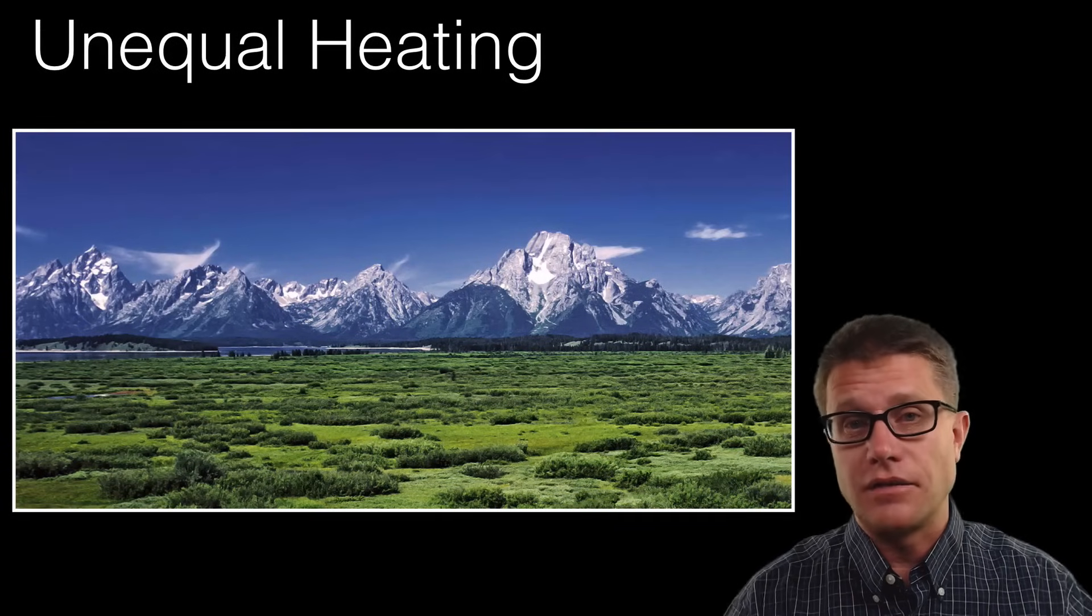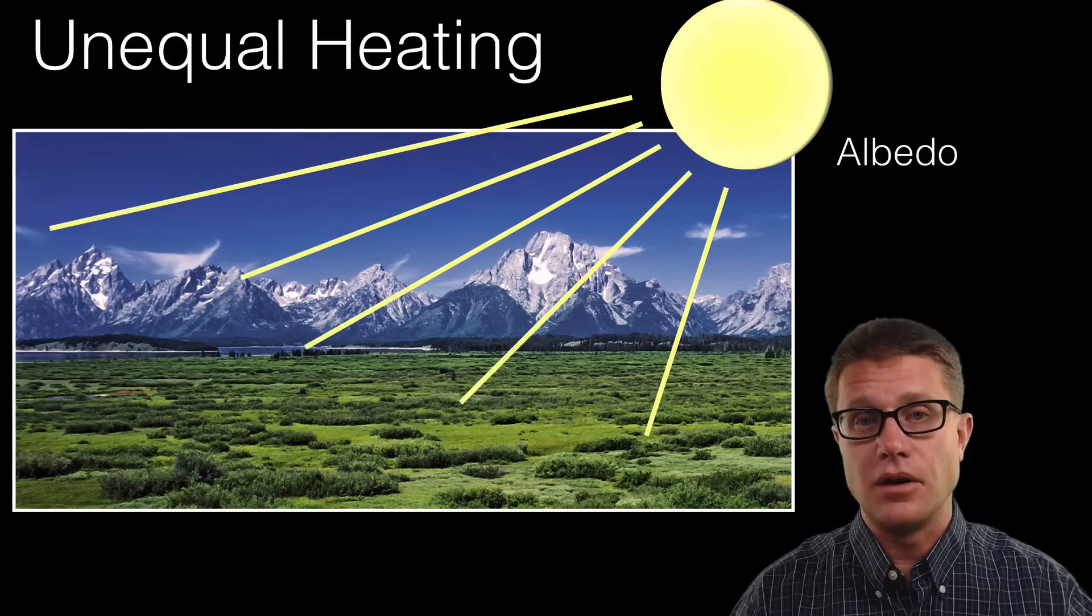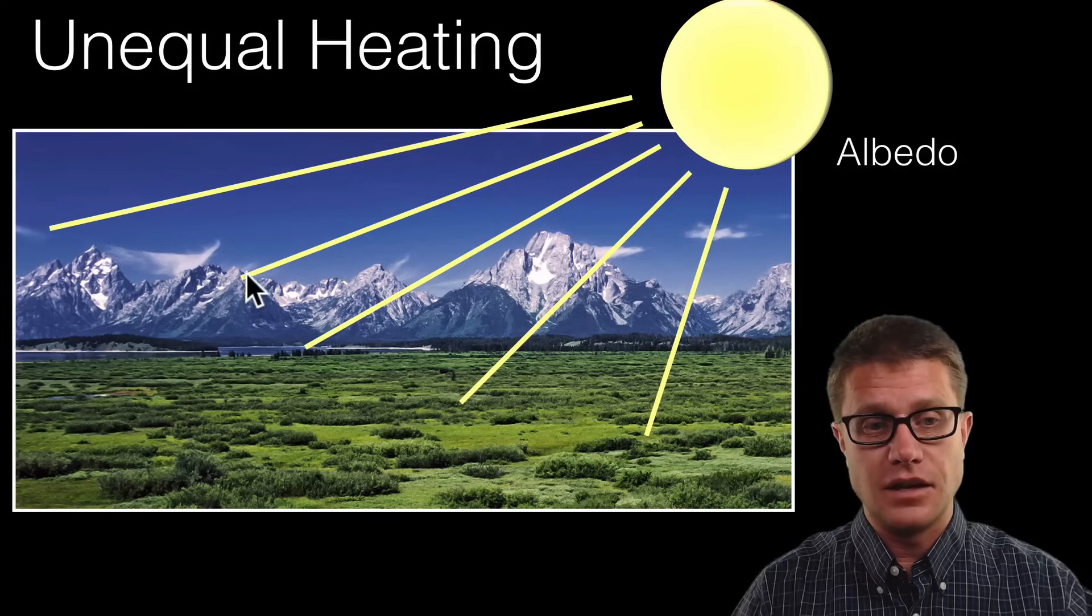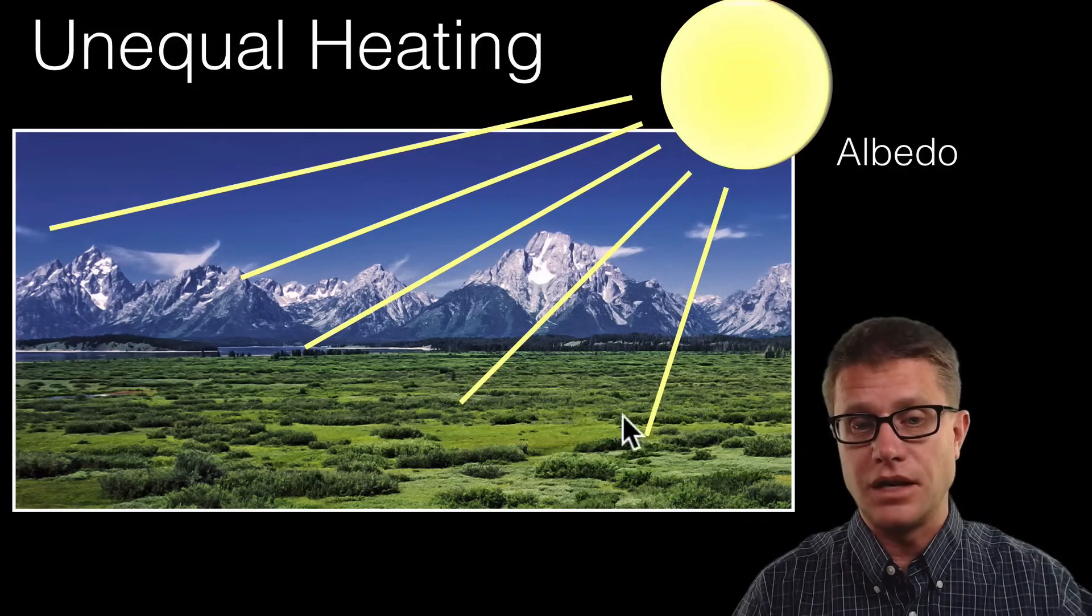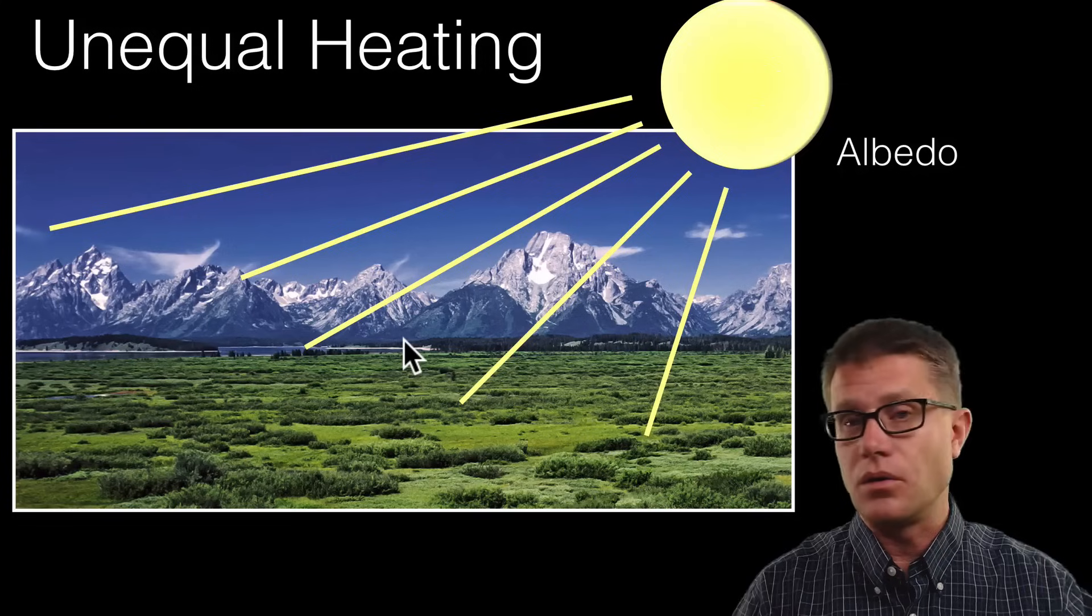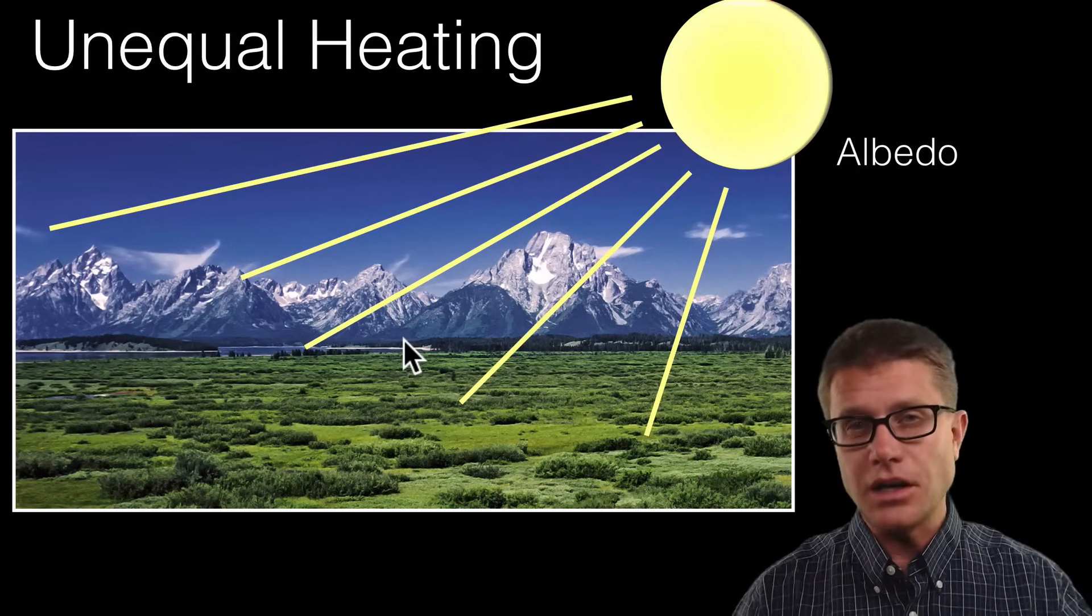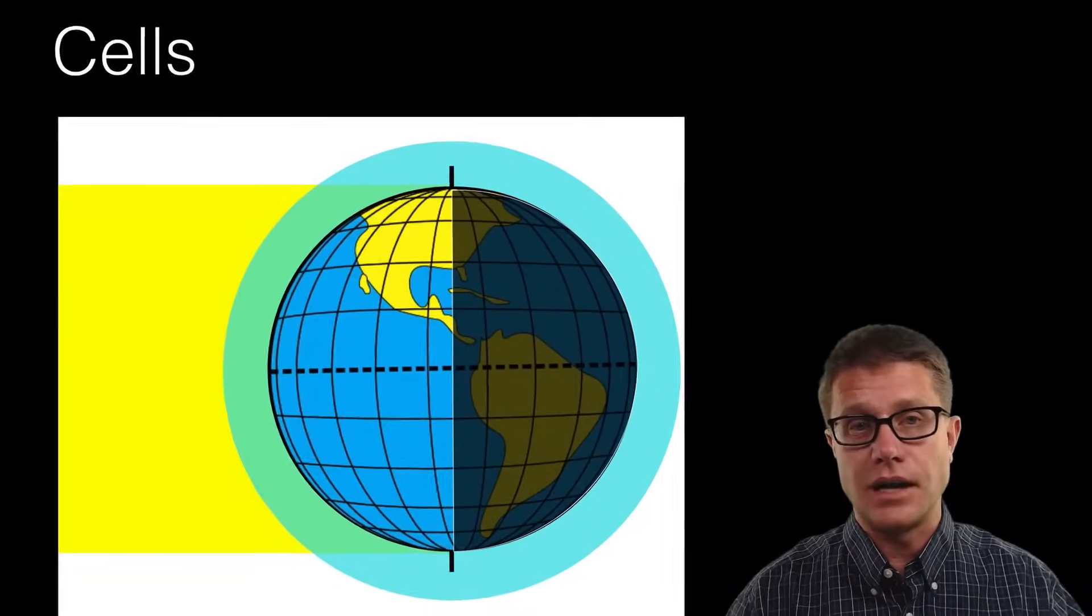The last thing that affects unequal heating is the albedo of the earth, it is our reflectiveness. As the sunlight hits the snow, for example, it is going to be reflected off. But if it hits vegetation or water, we are going to have a different amount of albedo. So it is a combination of all of these things that creates climate.